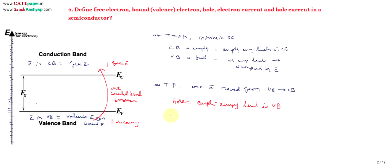A valence electron is a filled energy level — that is, an occupied energy level. A filled energy level in the conduction band represents a free electron. An empty energy level in the valence band is a hole. Free electron means electron in conduction band, valence electron means electron in valence band, and hole means empty energy level in valence band.